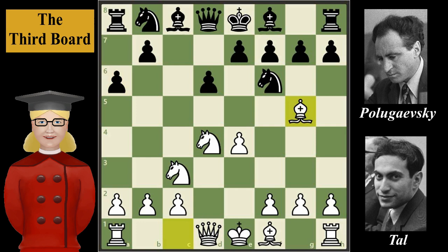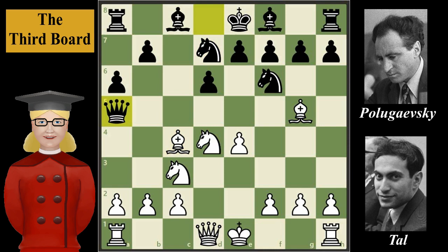The game continues with knight from b to d7, bishop to c4, queen to a5 — threatening the g5 bishop and pinning the knight — queen to d2, defending the bishop and unpinning, then e6. I remind the student that this is all opening theory. The Naïdorf variation was already a well-studied and analyzed opening even in Tal's time.